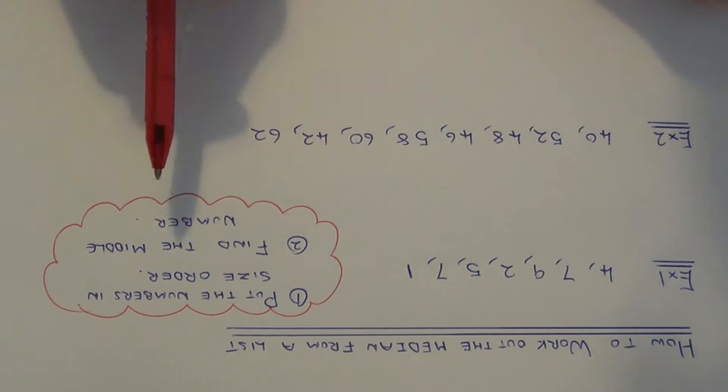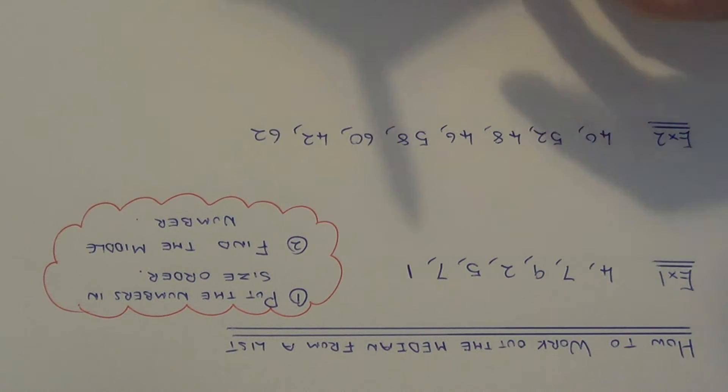And then the second step is to find the middle number. Sometimes you'll find that there will be two numbers in the middle. If you get two numbers in the middle, find the number in the middle of those two numbers.